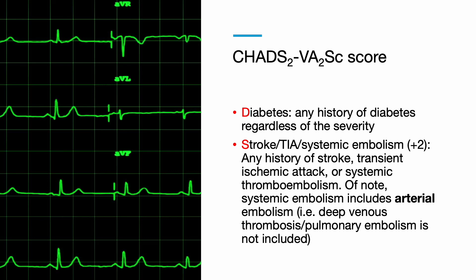D is for diabetes. S is for stroke, TIA, or systemic embolism — these are patients with history of stroke, transient ischemic attack, or systemic thromboembolism. Please note that systemic embolism includes arterial embolism, and therefore DVT and PE are not included in this patient population.